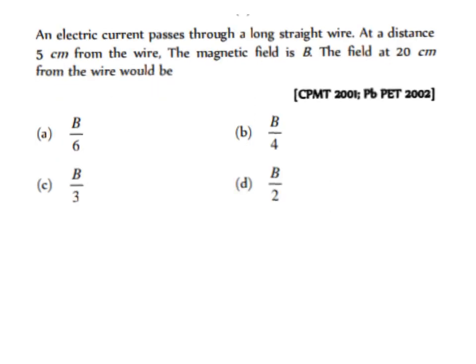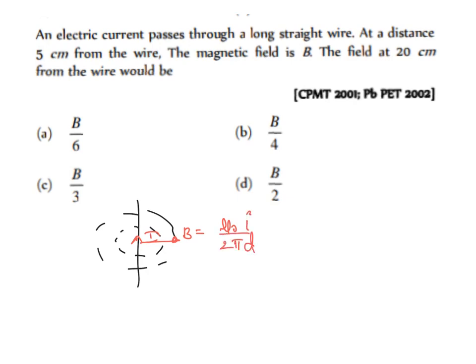The next problem: an electric current passes through a long straight wire. At a distance of 5 cm from the wire, the magnetic field is B. The field at 20 cm from the wire would be? The magnetic field due to a long straight conductor is B = μ₀I / (2πd), derived using Biot-Savart's law and Ampere's Circuital law.